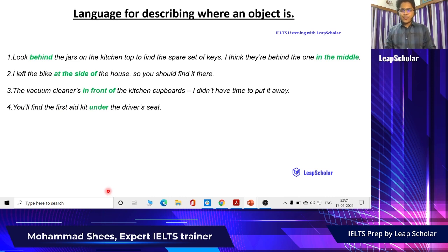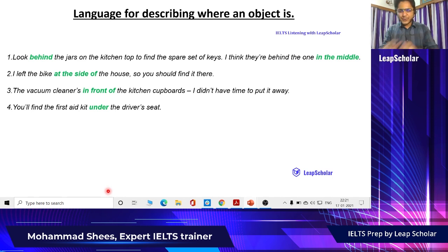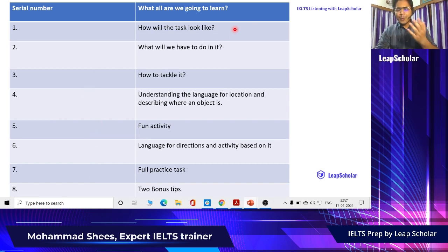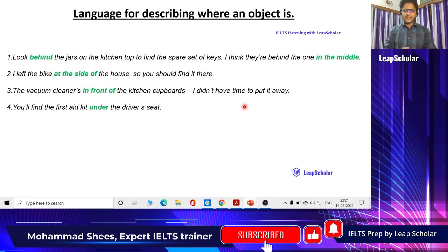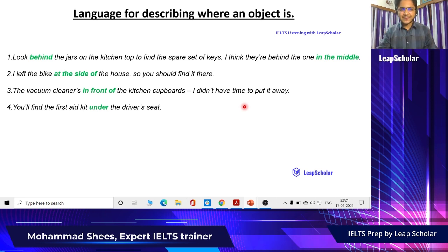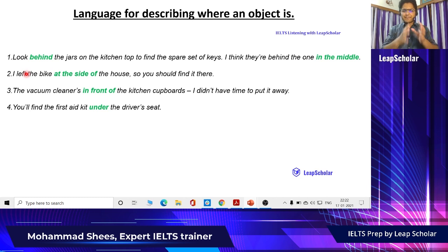Now, language for describing where an object is. Before I talk about this, all those who are watching this video till here, congratulations. For example, if you have to tell someone where a particular object is: 'Look behind the jars on the kitchen top to find the spare set of keys — I think they are behind the one in the middle.' The keywords here are 'behind' and 'in the middle' — they are describing where the object is.